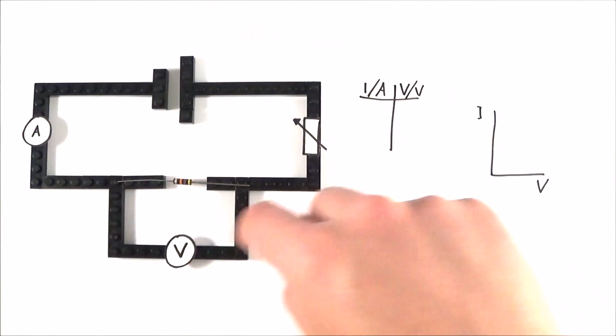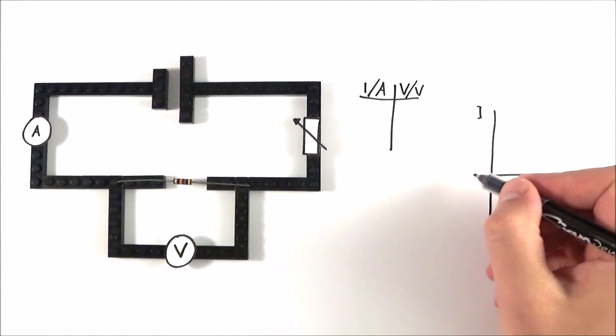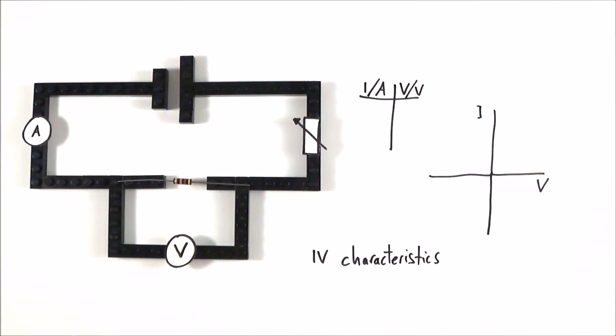What this means now is that the conventional current, rather than going this way around the circuit, tends to go in this direction. So we now have values for current which are negative, and this will then give us a negative potential difference across that component.